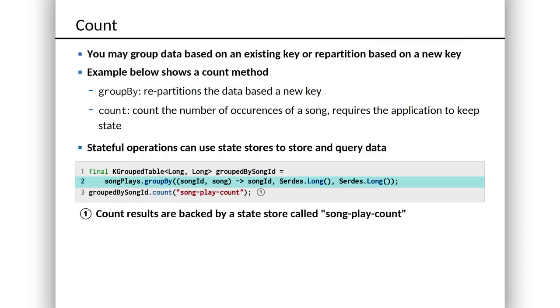We're gonna start with the stream of play events. That's song plays there on line two, and then we're gonna group it. We're gonna call the group by method. A group by is gonna take three parameters here. The first one is a lambda describing by what we want to group, and the second two are serdes, just telling it what the type of the resulting stream key and value are gonna be.